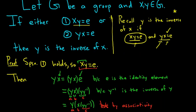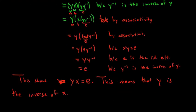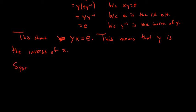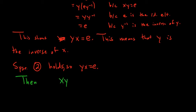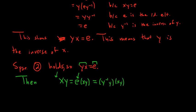Now let's show the other case; I'll be a bit quicker. Suppose two holds: suppose yx equals E. Now we have to show that xy is equal to E. So looking at xy, this time we have yx = E and want to show xy = E. We want a y on the left of x, so we put E there first: Exy, because E is the identity. We can write this as y⁻¹·y·x·y, because y⁻¹ is the inverse of y.